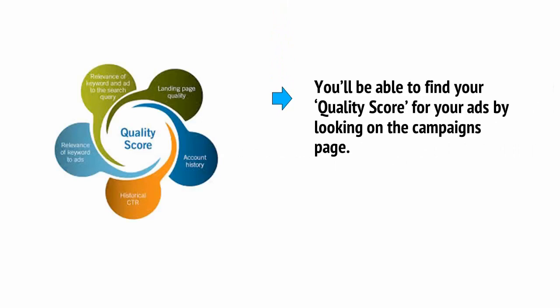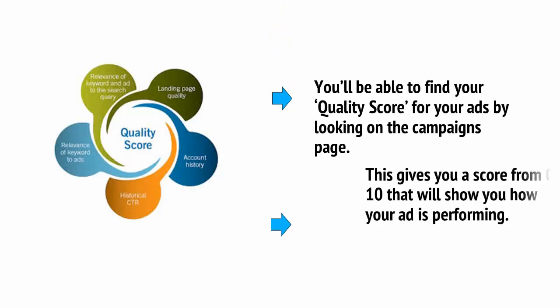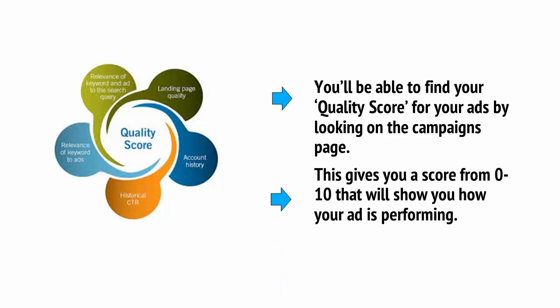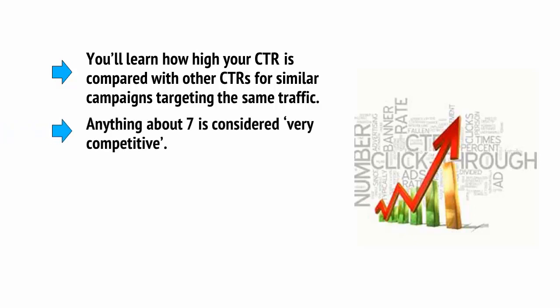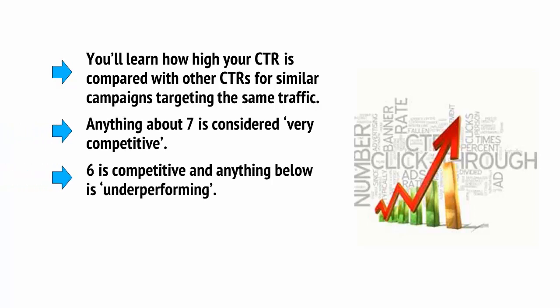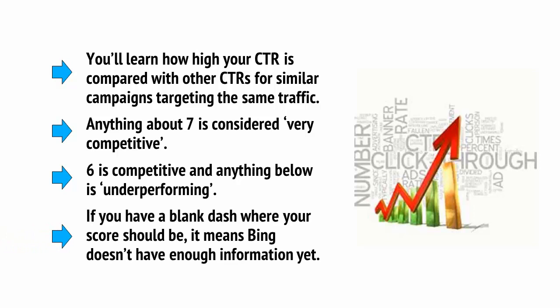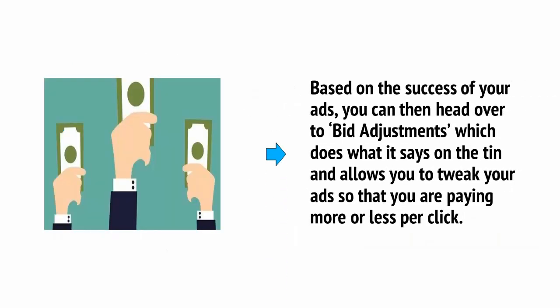You'll be able to find your quality score for your ads by looking on the campaigns page. This gives you a score from 0 to 10 showing how your ad is performing — how high your CTR is compared with other CTRs for similar campaigns targeting the same traffic. Anything above 7 is considered very competitive, 6 is competitive, and anything below is underperforming. If you have a blank dash where your score should be, it means Bing doesn't have enough information yet. Based on the success of your ads, you can head over to Bid Adjustments, which allows you to tweak your ads so that you'll pay more or less per click.